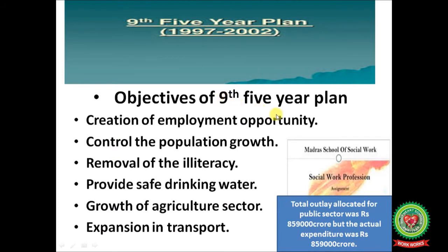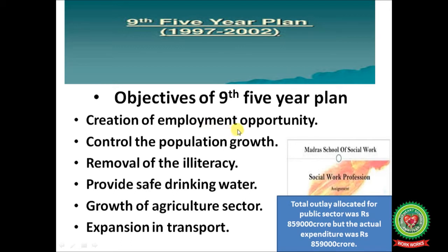Objectives of the 9th five year plan: the total outlay allocated for the public sector was Rs 8,59,000 crore, and the actual expenditure was also Rs 8,59,000 crore — meaning there was 100% achievement in the 9th five year plan according to total outlay. The objectives included creation of employment opportunities by setting up new industries and increasing employment in the tertiary sector, like banking, insurance, transportation, and shipping.